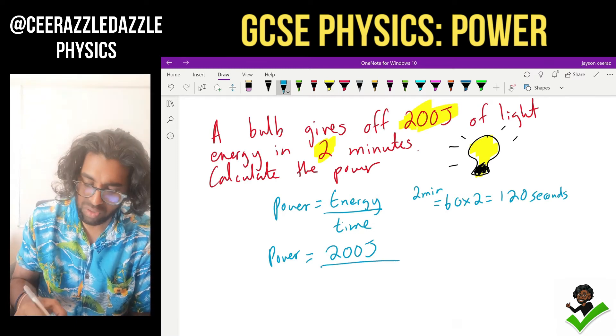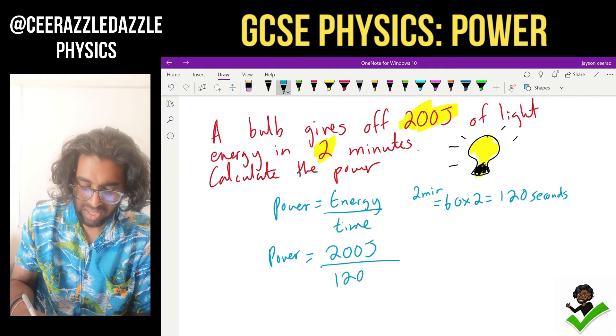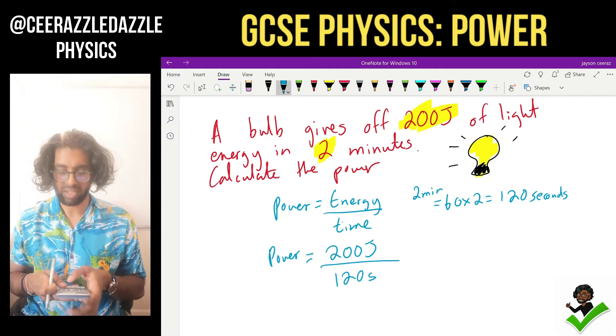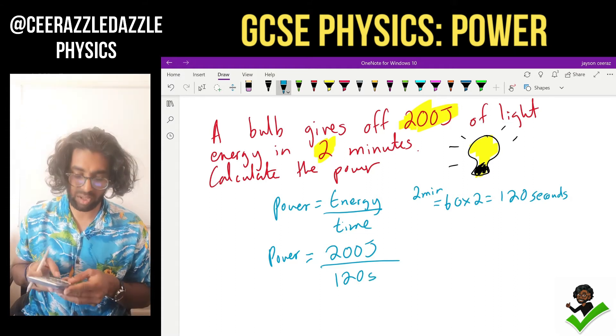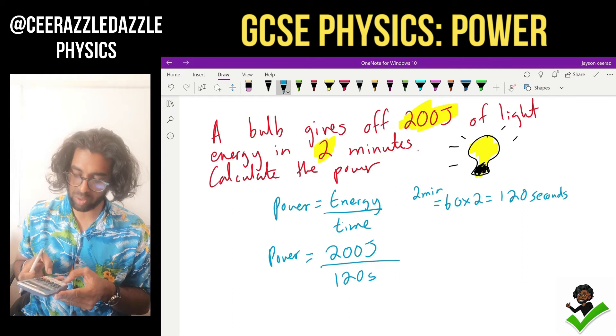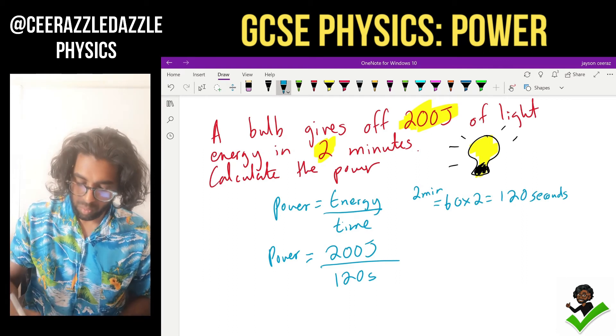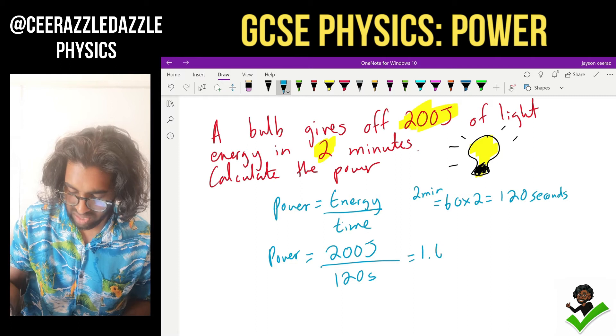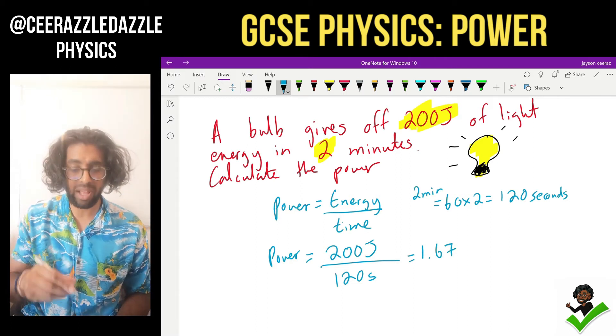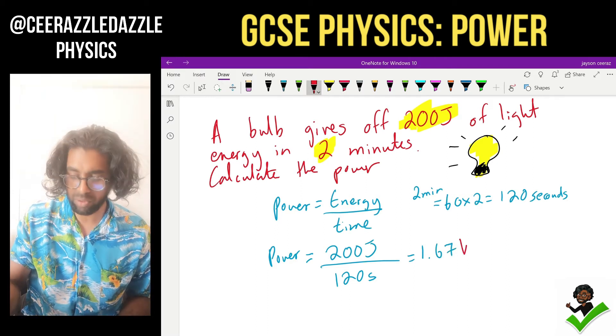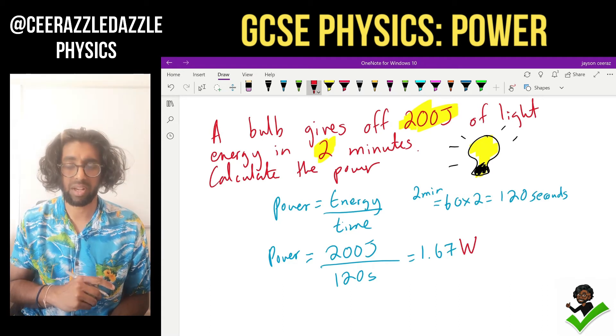Therefore, plugging it in 200 divided by 120 is going to be our answer. So let's take out a calculator. 200 divided by 120 equals 1.67 and the units of power we know are going to be capital W for watts. Simple stuff.